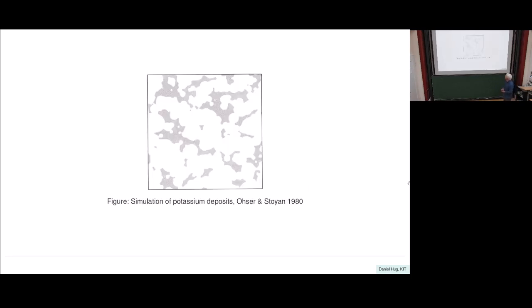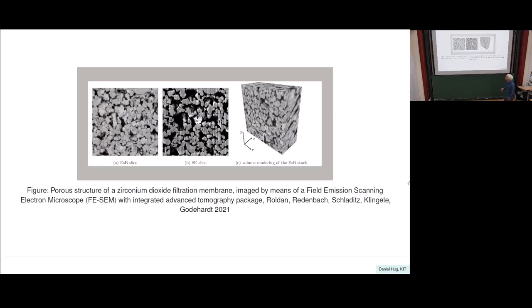Here's a simulation from an older paper by people in applied science, like Tristonia and Joachim Rosa. They use simulation of a Boolean model of balls — you can see the white parts are obtained by taking unions of random spheres in the plane, chosen to simulate potassium deposits. Once you have such simulations, you can compare them to real pictures and adjust the parameters. This more recent field emission scanning electron microscope image, obtained after slicing on a nanometer scale, shows just the union — you can't recognize individual boundaries.